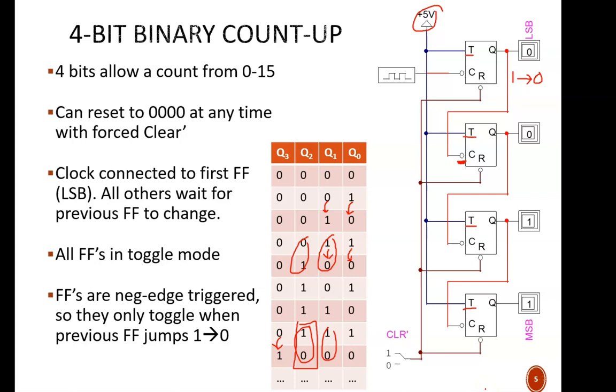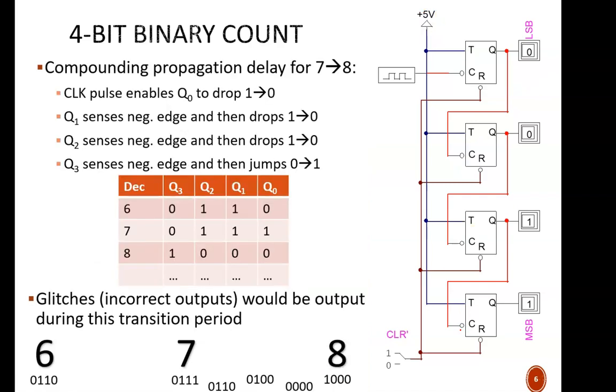The key thing is to use negative edge-triggered flip-flops. But there's the classic asynchronous problem: glitches. Let's illustrate this with the worst-case scenario, the jump from 7 to 8.